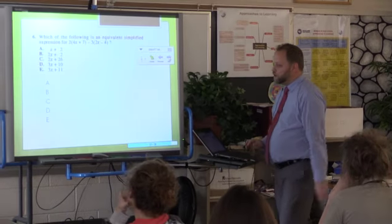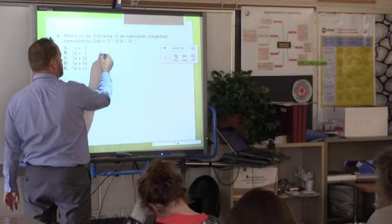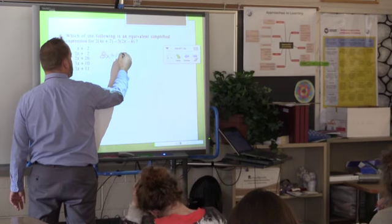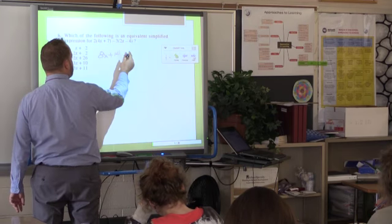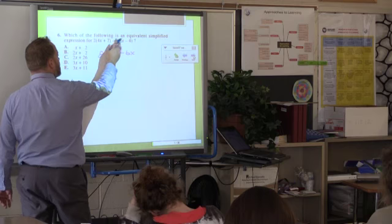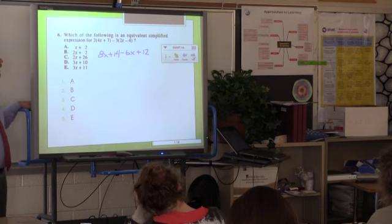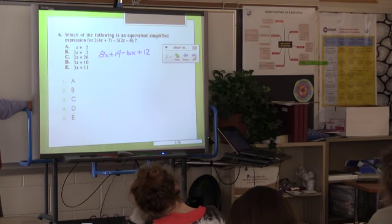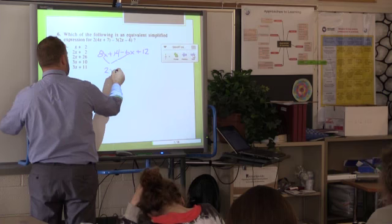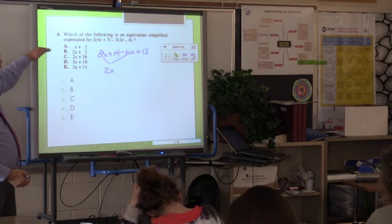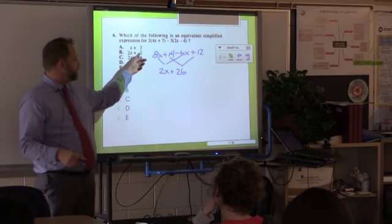The first one here, we could use that distributive property. Two times this parenthesis would be two times both of those quantities. And two times 4x makes 8x. And two times seven would make 14. And then same thing with our second distribution here. We have a negative 3 times 2, which would make negative 6x. And a negative times a negative would make a positive 12. And so after distributing, we get 8x plus 14 minus 6x plus 12. But then we need to simplify. We need to combine our like terms. 8x and a minus 6x combined to make 2x.